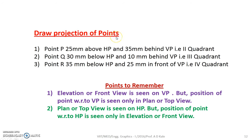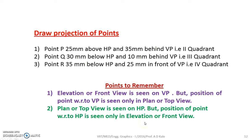Draw the projections of the point: Point P is 25 mm above HP and 35 mm behind VP. First, you have to understand the location of point P — whether it is in the 1st, 2nd, 3rd or 4th quadrant. In this particular course we understand the projection of points only in the first quadrant. Remember: elevation or front view is seen on the vertical plane but position of point with respect to VP is seen only in the plan or top view. Plan or top view is seen on HP but position of point with respect to HP is seen only in the elevation or front view.